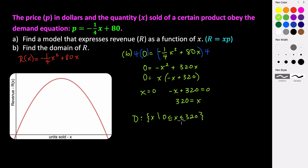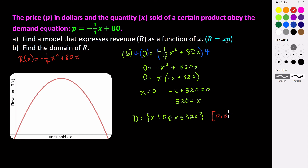The domain is all x values from zero to 320, using less than or equal to on both ends because we're allowed to sell zero or 320 items — though at those points revenue is zero. So the domain is 0 ≤ x ≤ 320, or in interval notation, [0, 320].